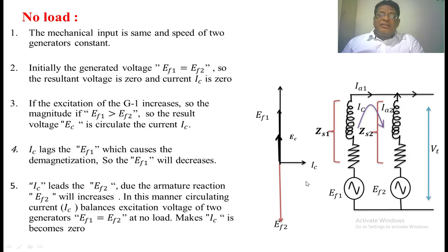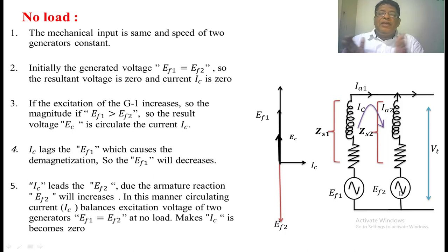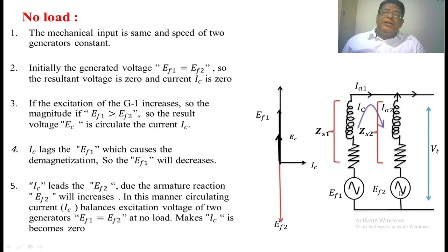Due to the armature reaction, there is a demagnetizing effect in the first generator where EF1 is the excitation. So the net flux will be decreased. With respect to the second generator, the circulating current leads EF2. So due to the armature reaction, the flux in the second generator will be increased, and so EF2 will be increased. In this manner, there is a balance between EF1 and EF2 at no load because of the circulating current, and the resultant voltage in the loop will become zero.